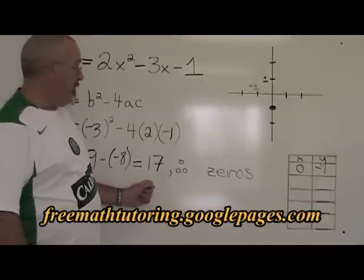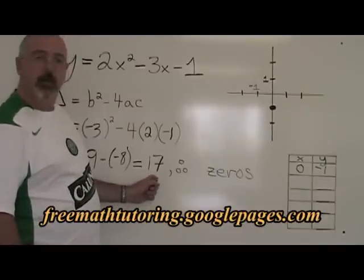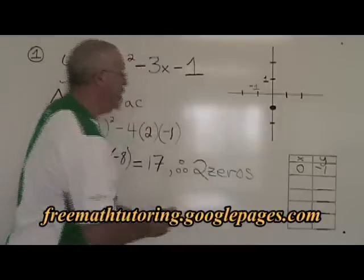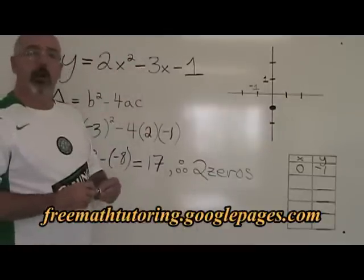17 is a positive number. And when we have a positive delta, it means we have two zeros. We have two x-intercepts. We have two roots.